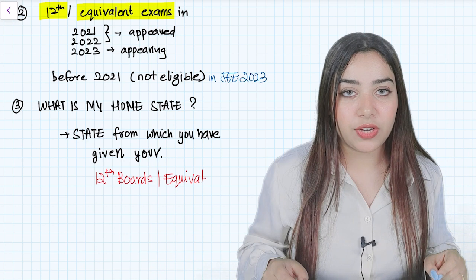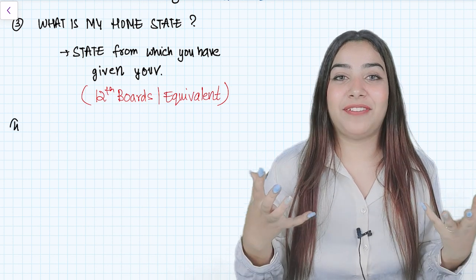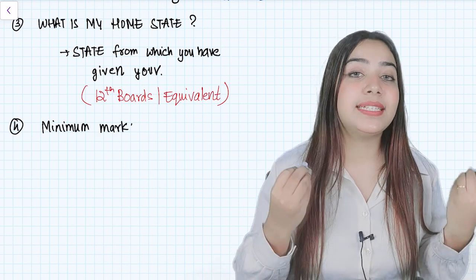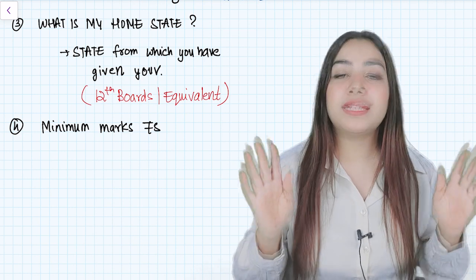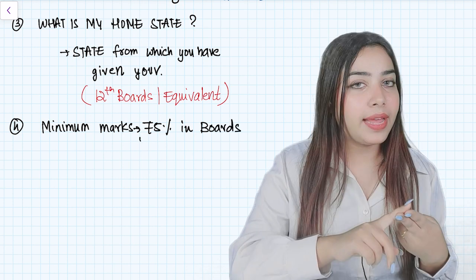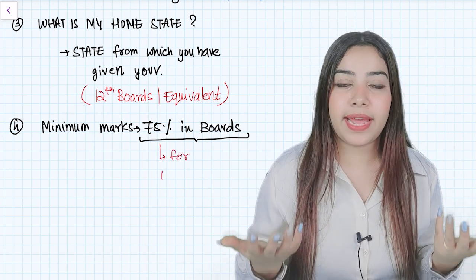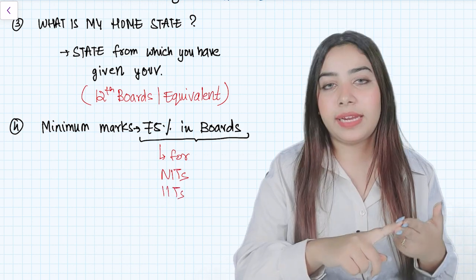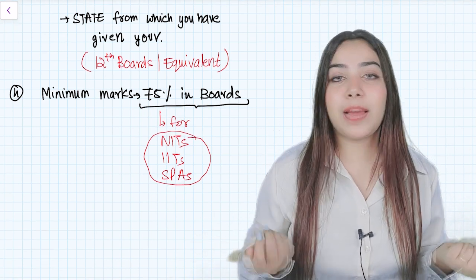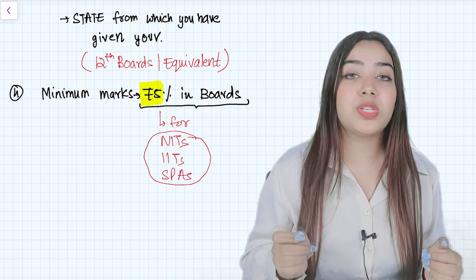Now comes the very crucial criteria which can be a very terrifying news for most of you. If your board's percentage is less than 75%, then you can still give the JEE B.Arch examination, but you will not be able to take admission in NITs, IITs, or centrally funded institutions. In case of JEE B.Arch examination, you have SPAs, right? So you will not get admission into SPAs or any NITs if your board's percentage is less than 75%. So it's not that you just focus on JEE B.Arch—that's completely a wrong decision. Please focus on your boards as well. You don't want to score less than 75%.